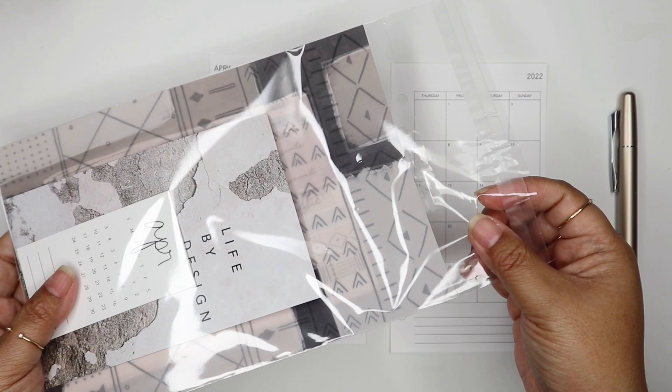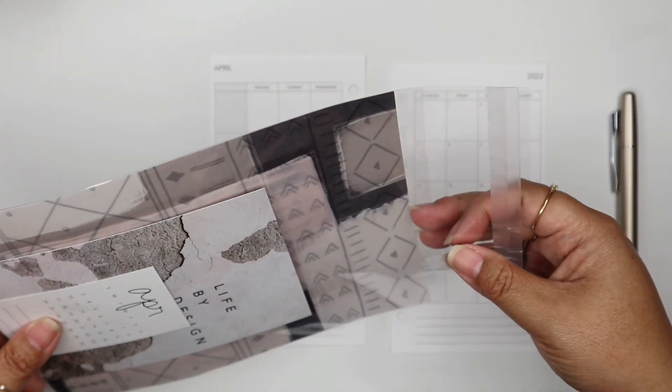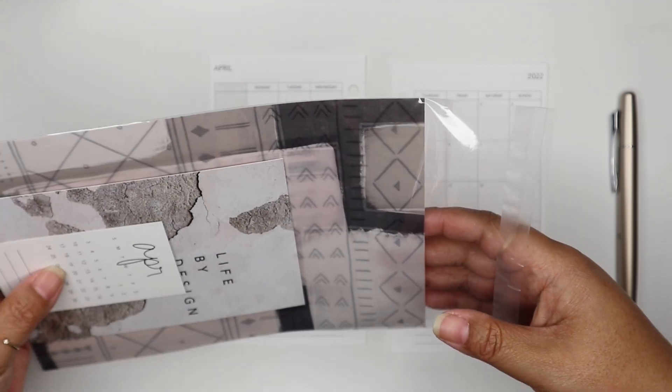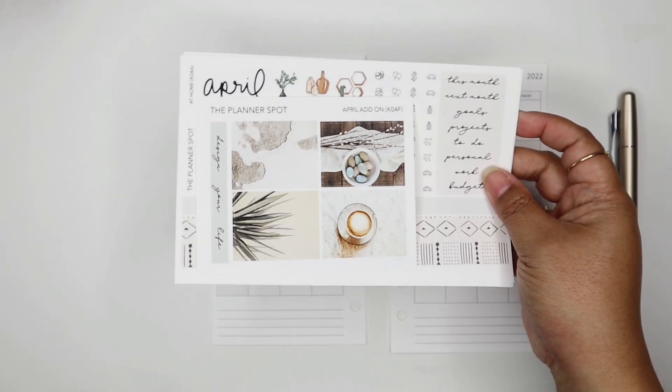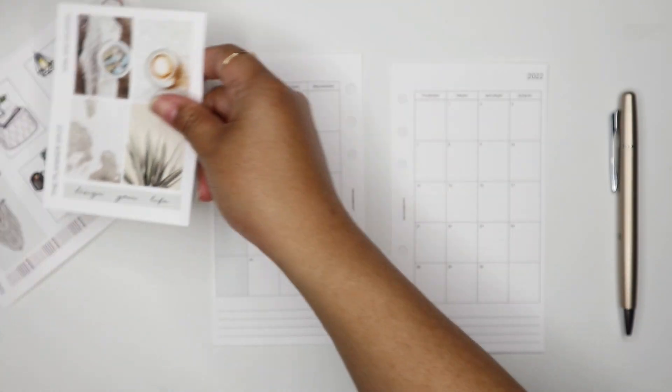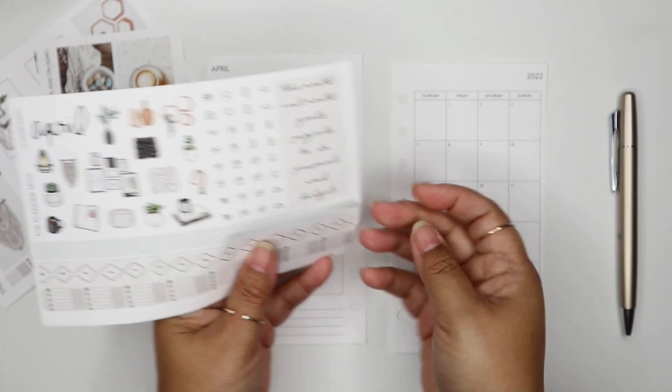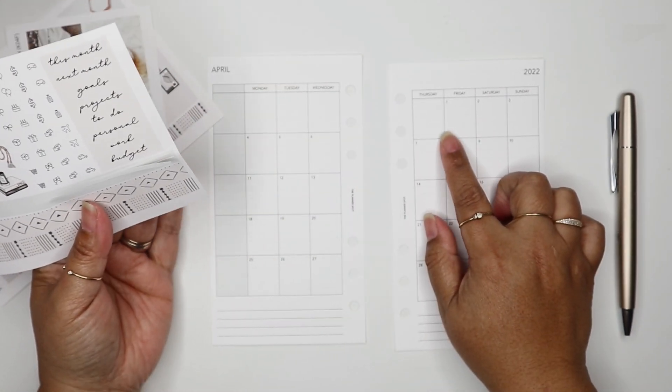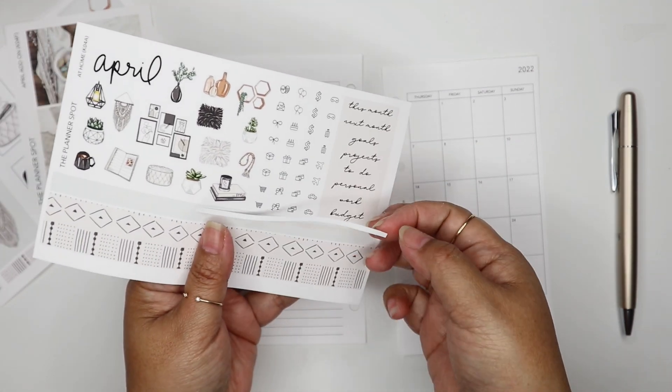I have this little packet of things from our February sub that I was saving for when I was ready to plan April. In the back I have my April sticker kit. The first thing I want to use is these thin washi strips because my daughter has a retreat this weekend.